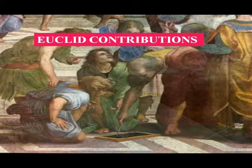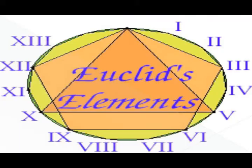Book 2 has been known as geometrical algebra because it states algebraic identities as theorems about equivalent geometric figures. This book contains a construction of the golden section, the division of a line into two parts.